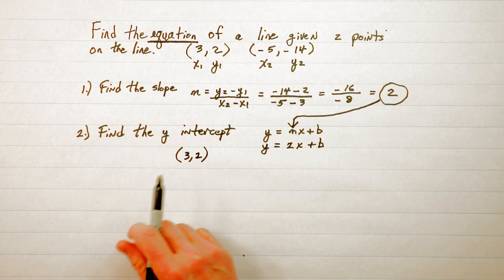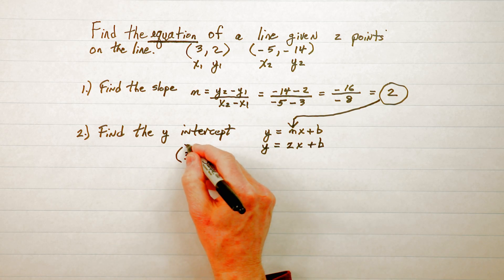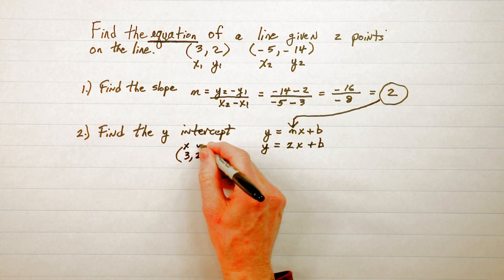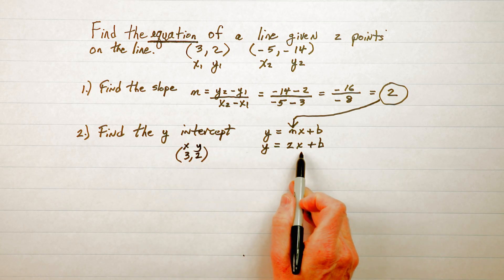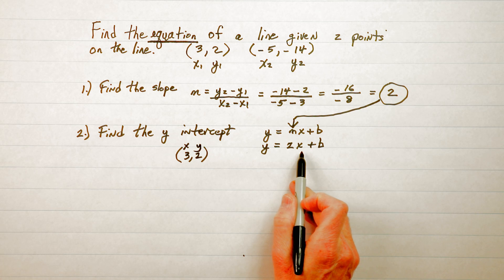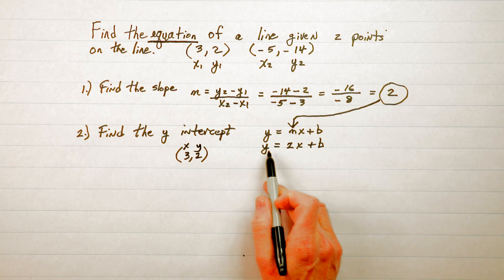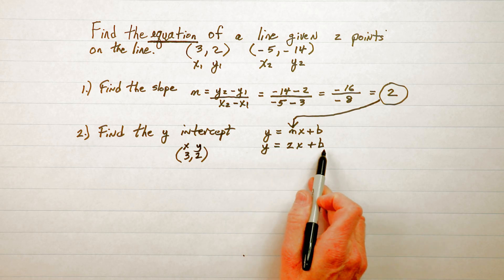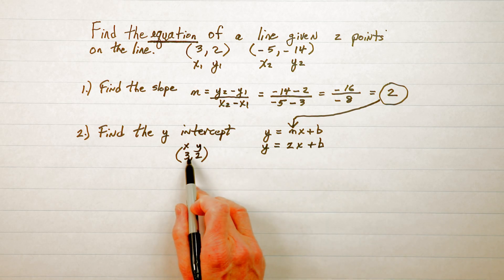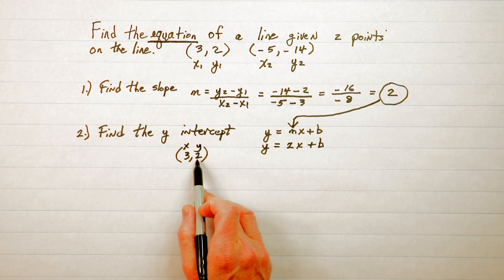Now we have to remember that 3 is x and 2 is y. So when we plug them into this equation we'll know where they go. Right now before we proceed we have three unknown variables so we can't possibly proceed. So we're going to take care of two of those variables right now.